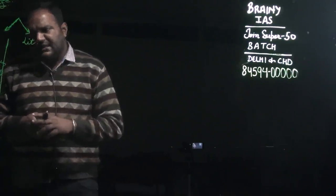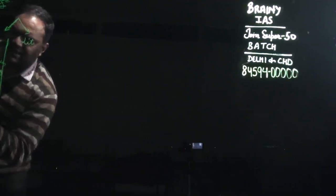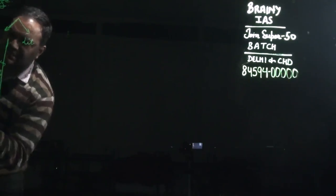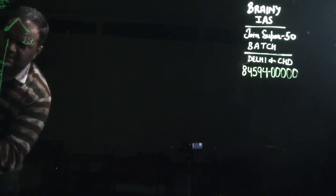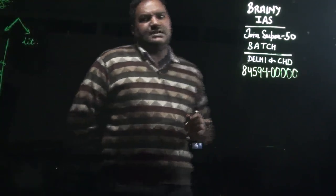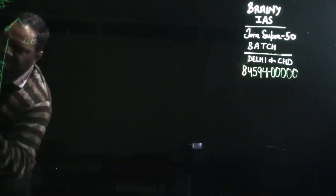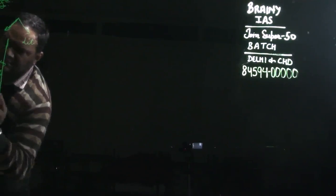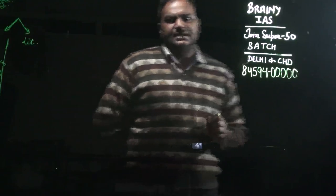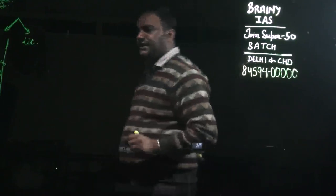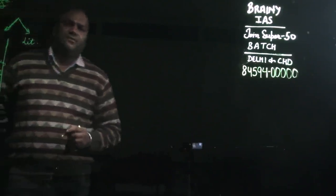One more archaeological source is the remains of Yakshas and Yakshinis. The remains of Yakshas and Yakshinis have been found from Didarganj. So the Didarganj Yaksha and Yakshini remains are also an important archaeological remain of the Mauryan Empire.